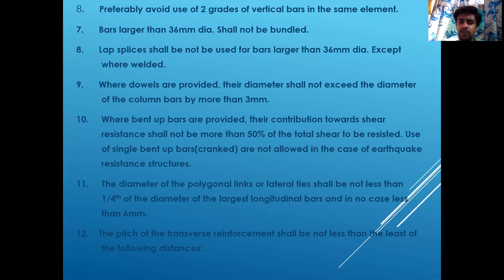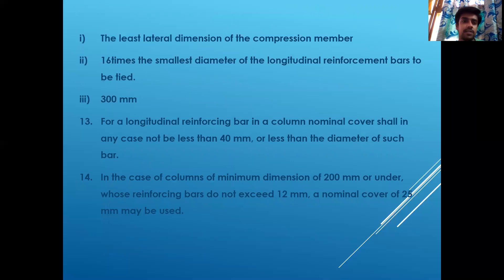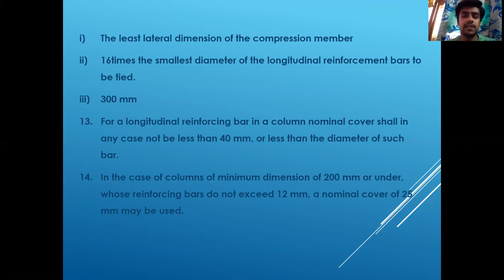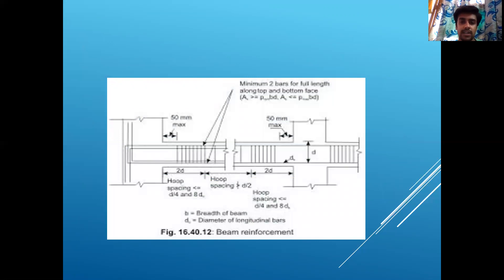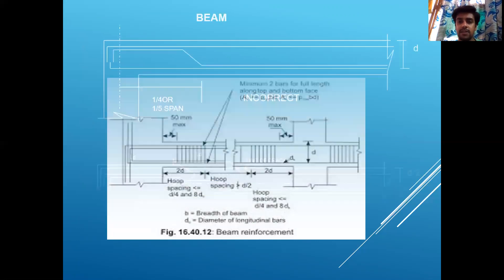The diameter of polygon links or laterals shall not be less than one-fourth the diameter of the longitudinal bar. The pitch of transverse reinforcement shall not exceed the least of: the least lateral dimension, 16 times the smallest longitudinal bar diameter, and 300 mm. For longitudinal reinforcement bars, nominal cover shall not be less than 40 mm. For columns with a minimum dimension of 200 mm or where reinforcing bars do not exceed 12 mm, a nominal cover of 25 mm may be used.